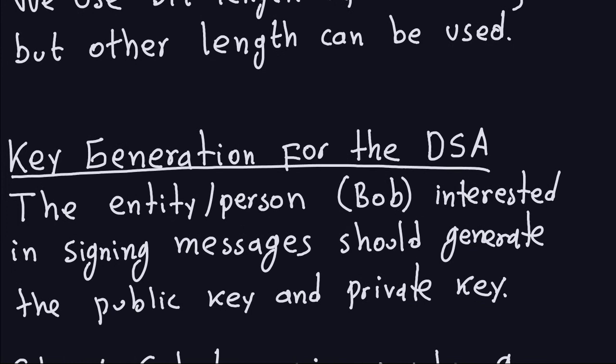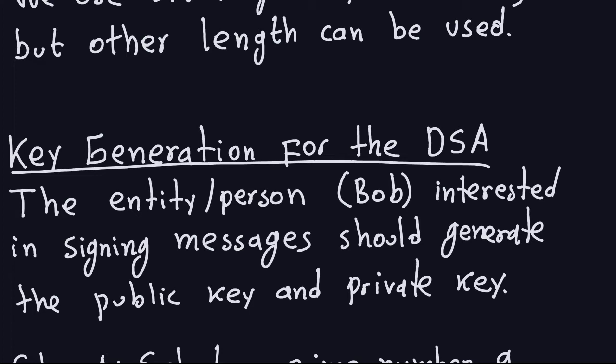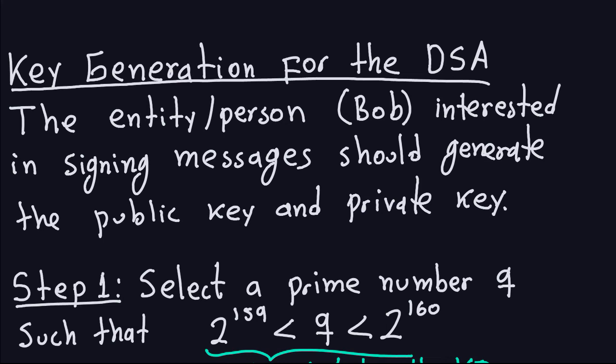We're going to look at key generation for the DSA. The entity performing key generation is the person interested in signing messages — in this case, Bob. Bob generates both the public key and the private key. The public key is used to verify that a signature is valid, and the private key is kept secret so only Bob can sign messages on his behalf.